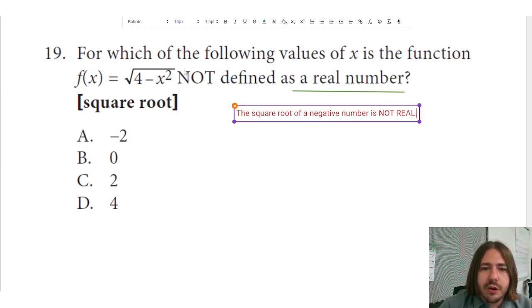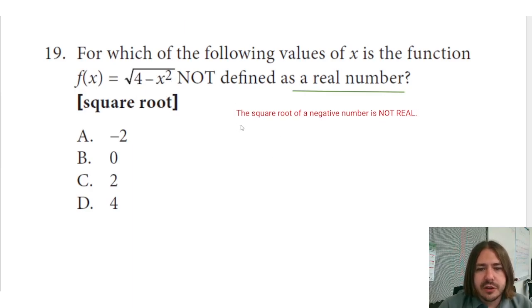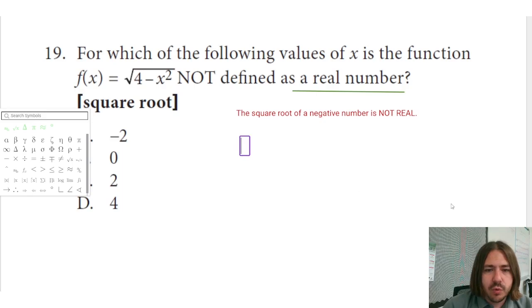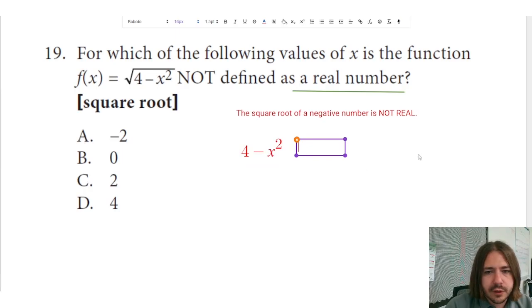Okay, so in order for this to be not a real number, this number underneath here needs to be negative. Okay, so I guess the easiest way to say this is what we're looking for is 4 minus x squared needs to be negative for f(x) to be not real.